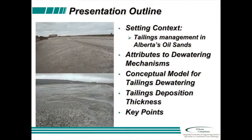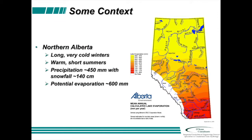I'll set the context for climate in the way we'd like to present it today and talk a little about tailings, dewatering, and some key points. Long cold winters as we know, hot dry summers — there is an annual moisture deficit and very much a seasonal moisture deficit. There's more evaporation in the summertime than precipitation, which means we could potentially take advantage of that to achieve some strength characteristics.